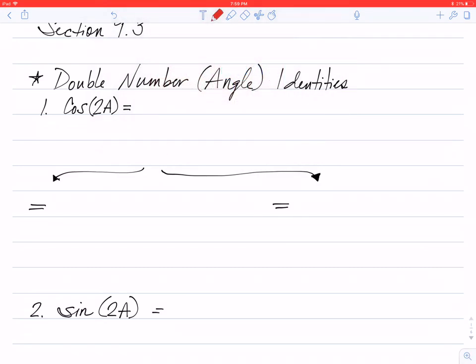Now remember that cosine of an angle plus an angle, we've learned about those cosine sums. So what I'd like to do is rewrite this as cosine of A plus A, because A plus A is the same thing as 2A.